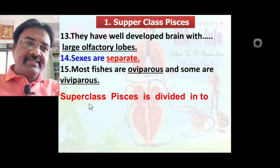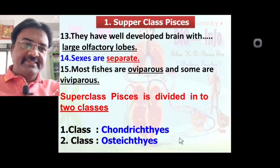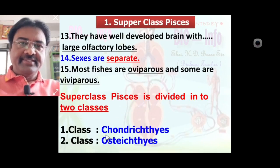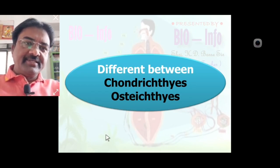Superclass Pisces is divided into two classes: Chondrichthyes and Osteichthyes. Chondrichthyes means cartilaginous fish group, and Osteichthyes means bony fish group. We will learn the characteristic features of each class on the basis of differences, because all general characters are included in superclass Pisces.